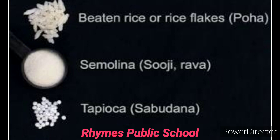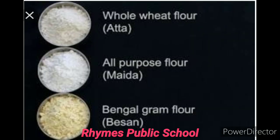Suji ya rava, jis se hum halwa banaate hain — usse kaha jata hai semolina. Sabudana ko kaha jata hai tapioca, ya sago balls. Aata means wheat flour, or whole wheat flour.